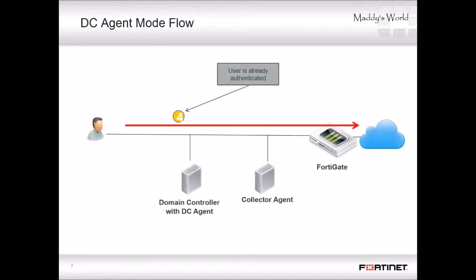So if the person now tries to access the internet, FortiGate compares the source IP address to its list of active FSSO sessions. In this case, the user has already logged on, so FortiGate will not request that the user authenticate again.